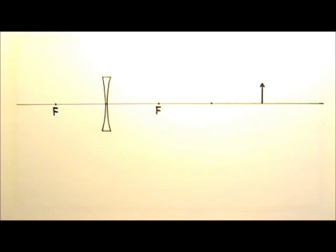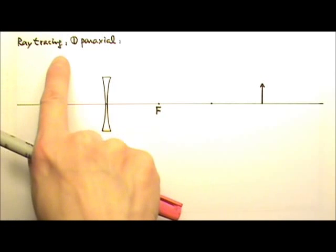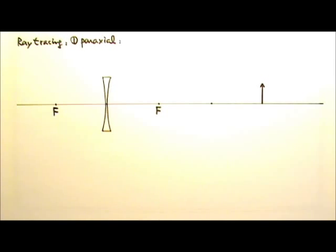Now let's work on a sample problem. Here we have a diverging lens and an object in front of it. And we are going to find the image produced by this lens. I have labeled the focal points on both sides of the lens. First, we are going to use ray tracing to find the image produced by this lens. To use ray tracing, we again need to draw two rays.